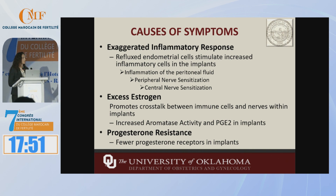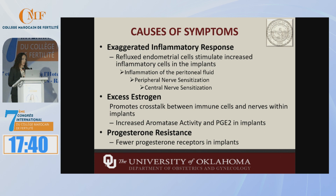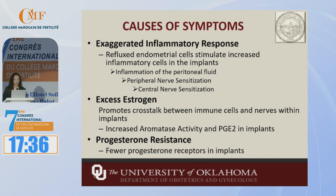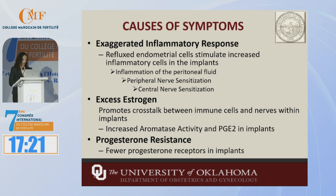The most common theory of how endometriosis is caused is by reflux of endometrial cells. When this happens, it stimulates an inflammatory response. You have an increase in inflammatory cells like COPs, macrophages, cytokines, even vascular endothelial growth factor and nerve growth factor. All of these are important to allowing the lesion to grow and then cause pain.